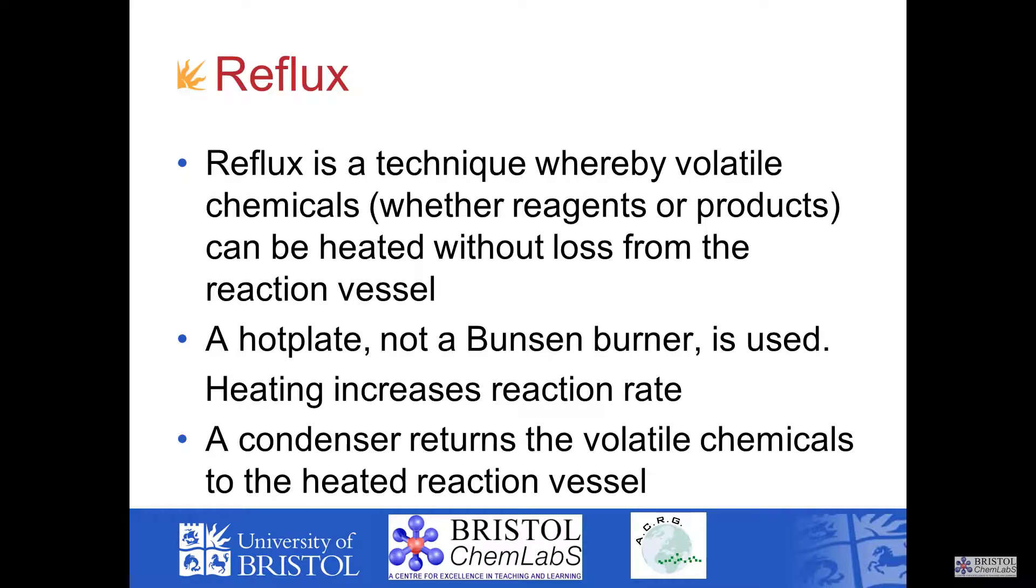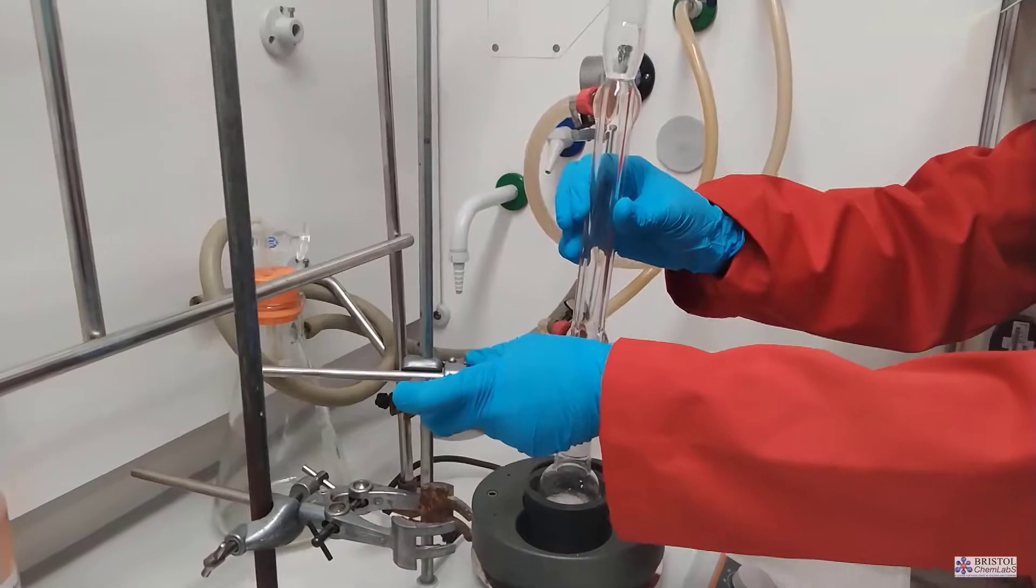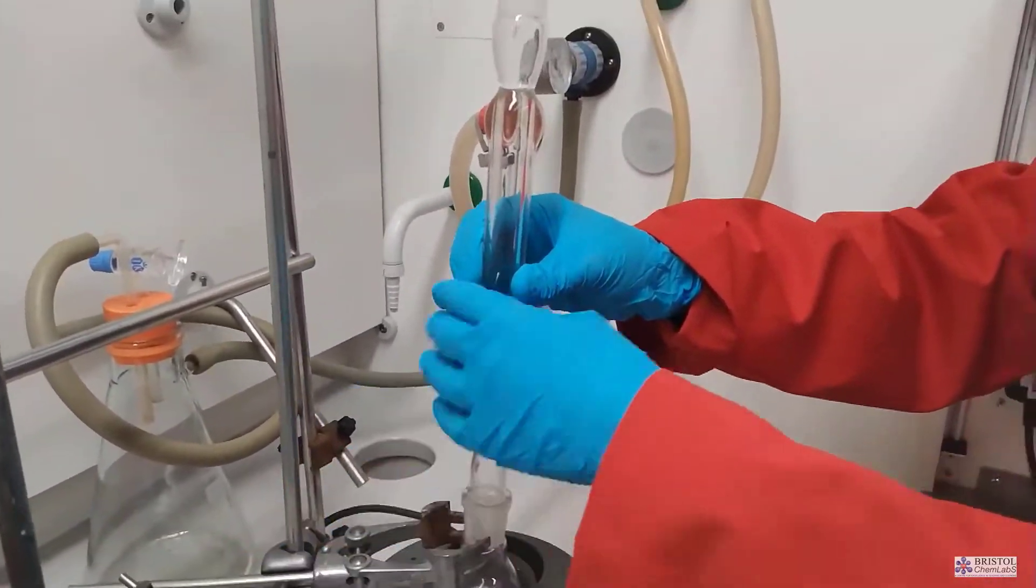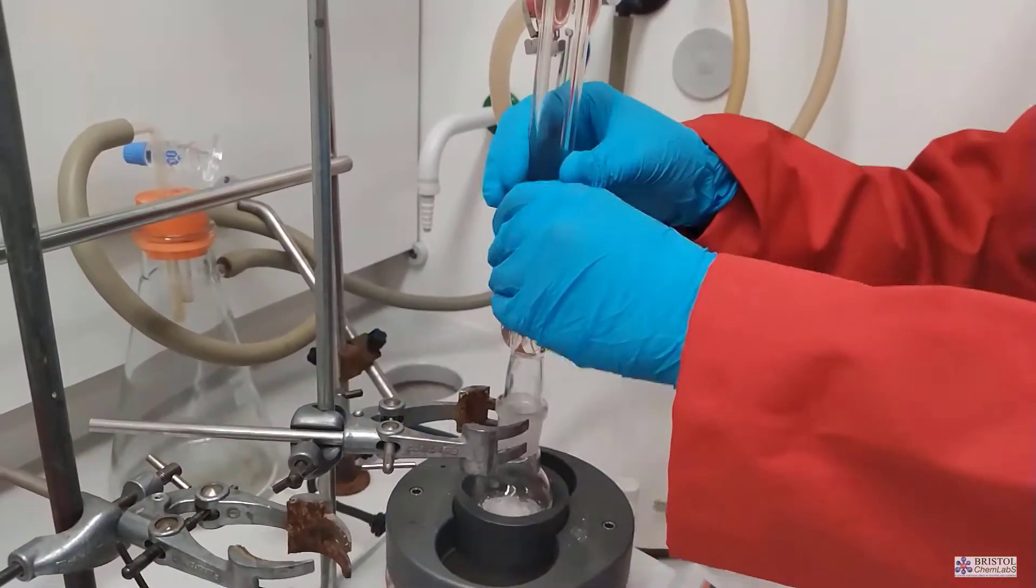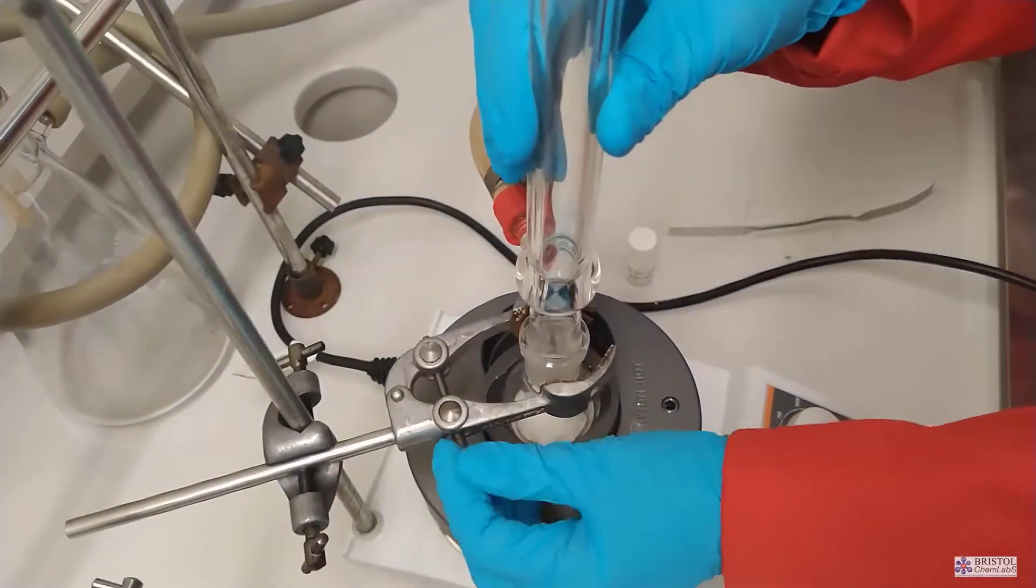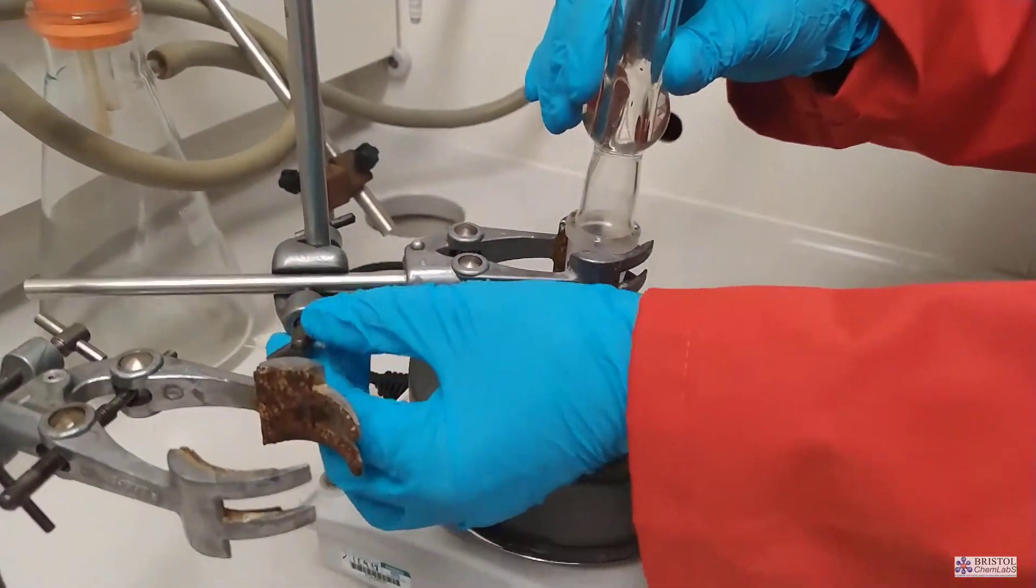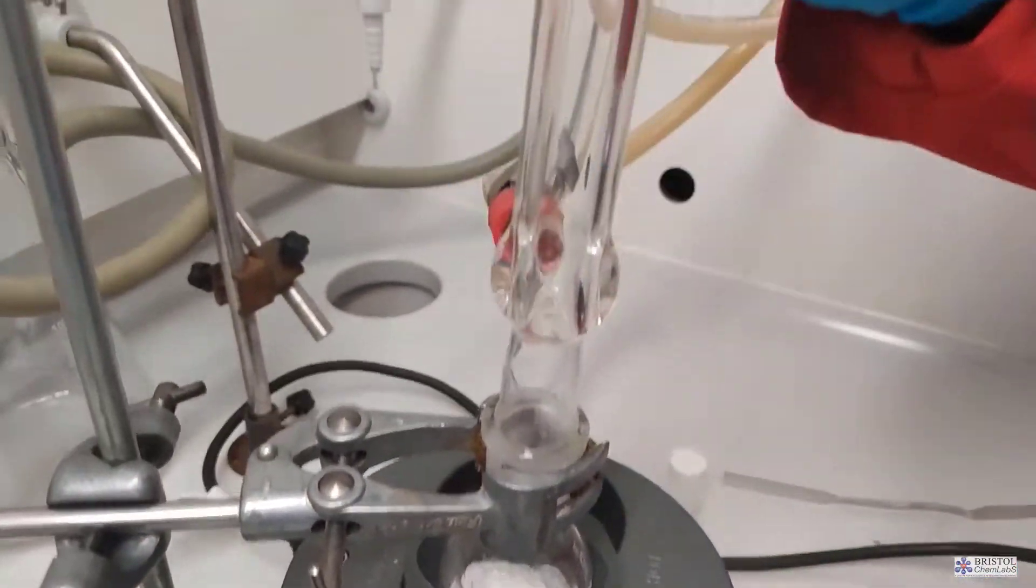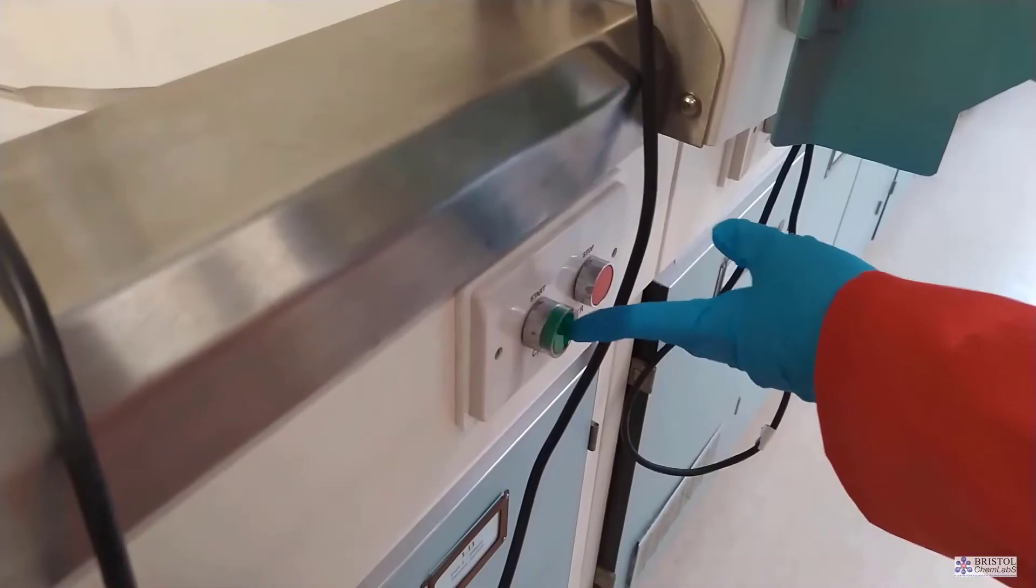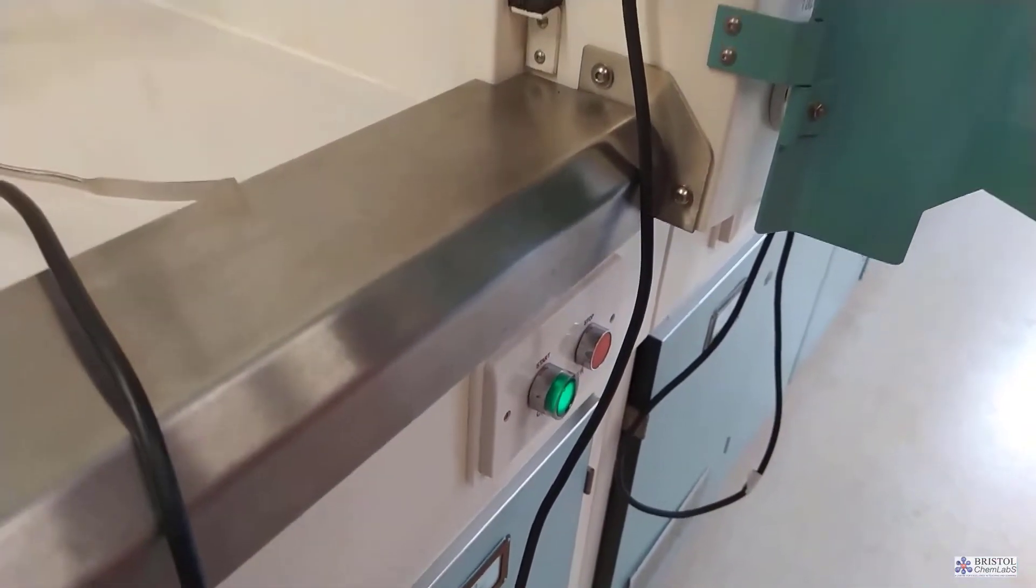The method of reflux is often employed in organic chemical reactions. Inorganic chemistry is a faster rate of reaction than organic chemistry. In general terms reflux allows us to heat up volatile materials or reactions that produce volatile products in a situation that doesn't allow any volatile materials to leave the reaction vessel. The vertical condenser simply delivers the condensed vapor back into the reaction mixture. We're using a heating mantle here rather than a Bunsen flame.